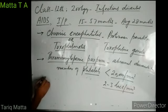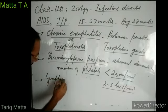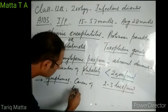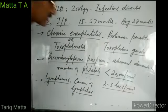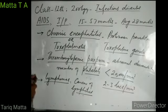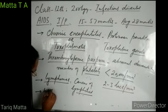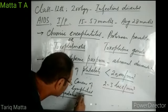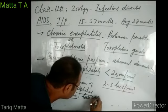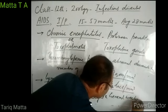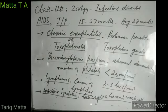AIDS patients also develop lymphomas — cancers of the lymphatics — where their lymph nodes and lymph vessels develop cancers. They also suffer from wasting syndrome, which means they lose weight and show general weakness, becoming very weak.